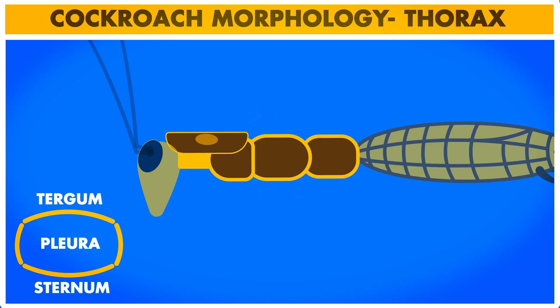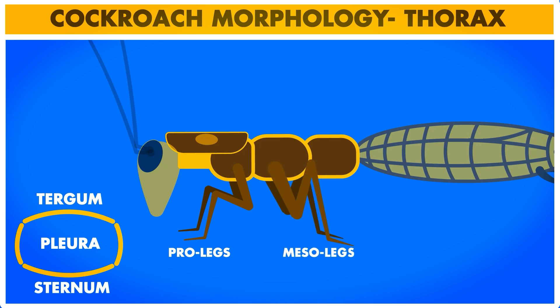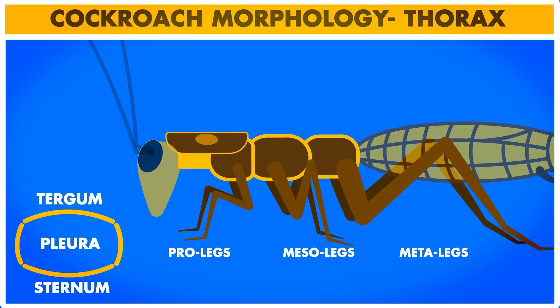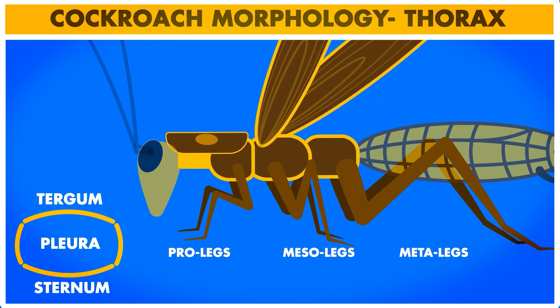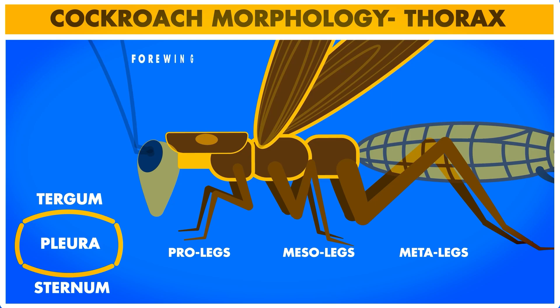Each of the thoracic segments bears a pair of legs: the pro leg, meso leg, and meta leg arising from the prothorax, mesothorax, and metathorax respectively. All three pairs of legs are similar in structure. Two pairs of wings also arise from the thorax. The first pair of wings called forewings arises from the mesothorax, hence also called mesothoracic wings. These wings are thick, leathery, and dark in color and are not used for flight but cover and protect the hind wings.